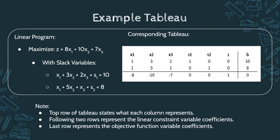The first row of the tableau represents what each column stands for — x1, x2, x3, the slack variables, the zeta value, and the beta value. The following two rows represent the linear constraint variable coefficients corresponding to those in the slack variable functions — for x1 the coefficients are 1 and 1, for x2, 3 and 5, etc. The last row represents the coefficients of the objective function, 8x1 plus 10x2 plus 7x3.